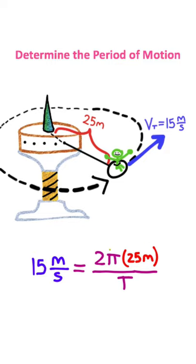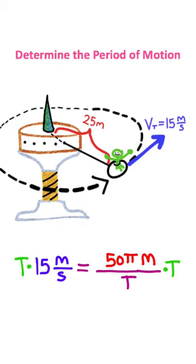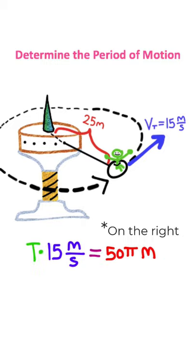What I'm going to do is take this 2π times 25 meters, simplify this, and then take the period and multiply it on both sides. That will get the periods to cancel, giving me this equation right here.